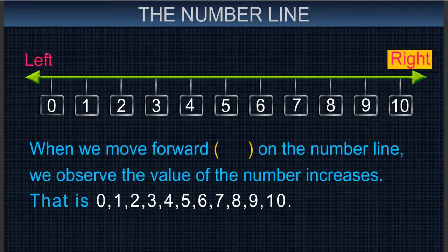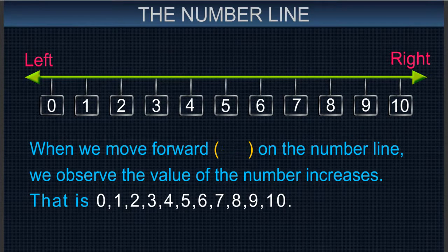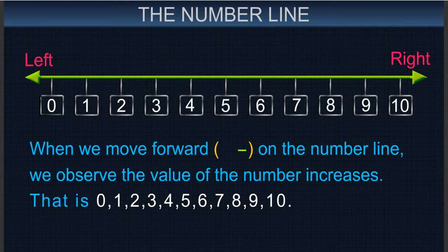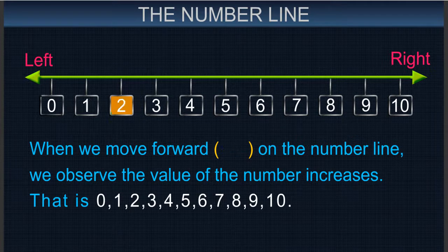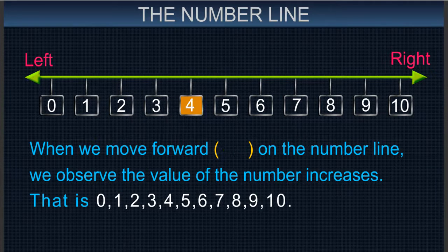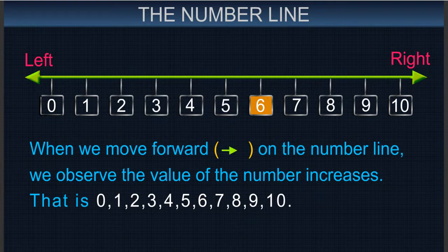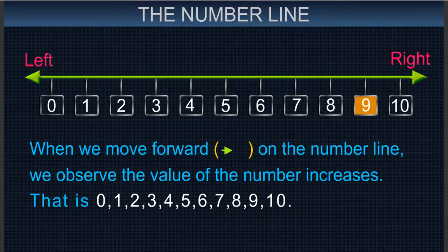When we move forward on the number line, we observe the value of the number increases. That is 0, 1, 2, 3, 4, 5, 6, 7, 8, 9, 10.